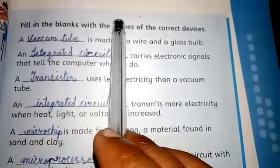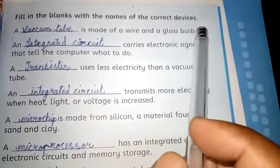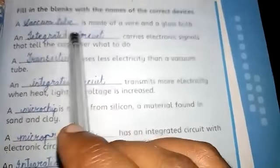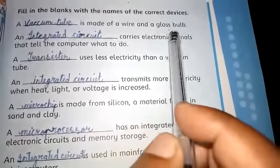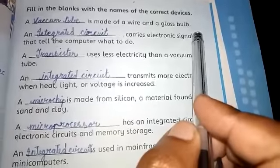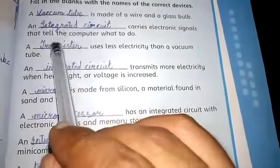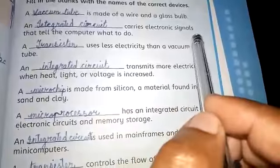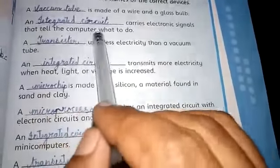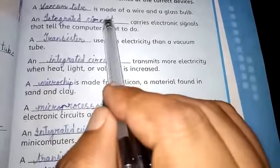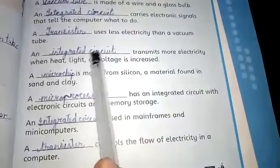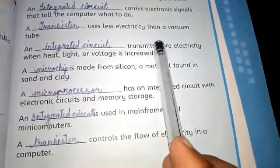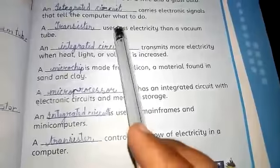Fill in the blanks with the names of the correct devices. A blank is made of wires and a glass bulb: vacuum tube. A blank carries electronic signals that tell a computer what to do: integrated circuit. A blank uses less electricity than a vacuum tube: transistor.